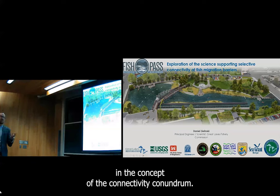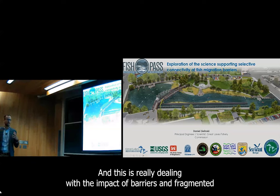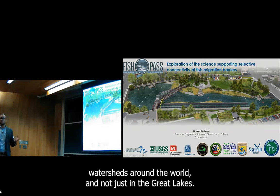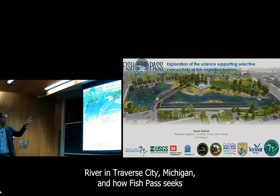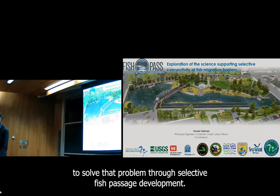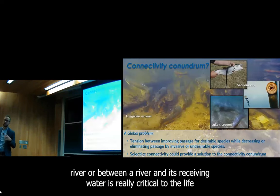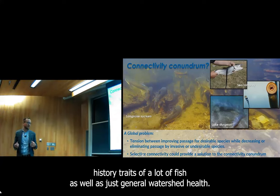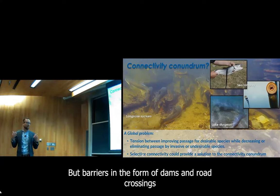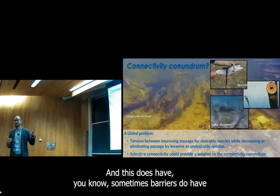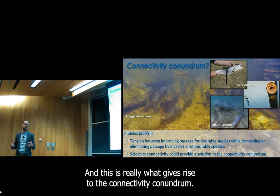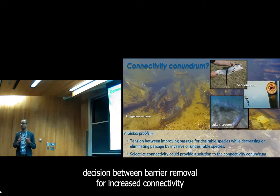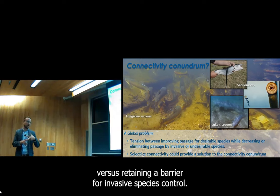I'm going to start by introducing the concept of the connectivity conundrum — dealing with the impact of barriers and fragmented watersheds around the world and not just in the Great Lakes. Connectivity within a river or between a river and its receiving water is really critical to the life history traits of a lot of fish, as well as general watershed health. But barriers in the form of dams and road crossings block that connectivity, though sometimes barriers do have an important role in blocking movement of invasive species. This is really what gives rise to the connectivity conundrum: the management decision between barrier removal for increased connectivity versus retaining a barrier for invasive species control.